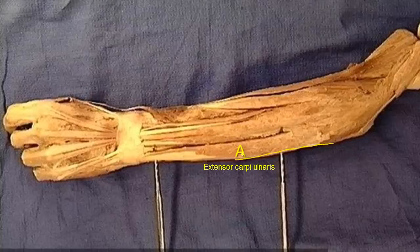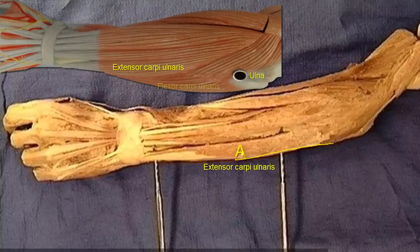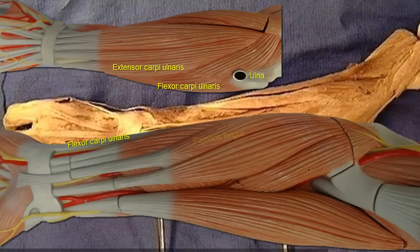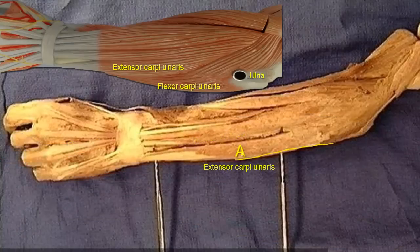It is comparable to its flexor counterpart, flexor carpi ulnaris. However, the insertion of flexor carpi ulnaris is through a ligament extending between the pisiform and the 5th metacarpal, called the pisometacarpal ligament. The subcutaneous border of the ulna, from which part of the muscle is attached, also provides origin for the flexor carpi ulnaris muscle. So, this subcutaneous border of the ulna can be considered as a border between flexors and extensors of the forearm. If you start from the subcutaneous border and travel anteriorly, you will find the flexor carpi ulnaris, and then palmaris longus, and flexor carpi radialis, and the other muscles of the flexor compartment. And if you travel posteriorly, then you will meet the extensor carpi ulnaris.